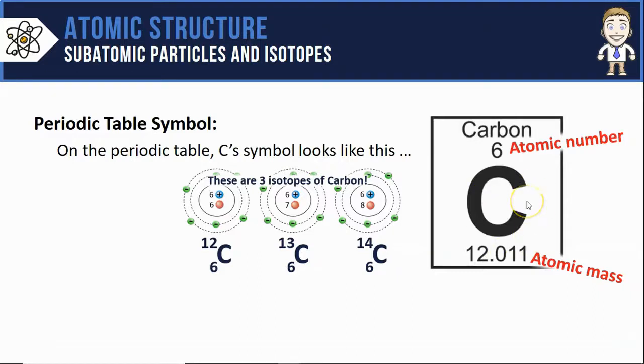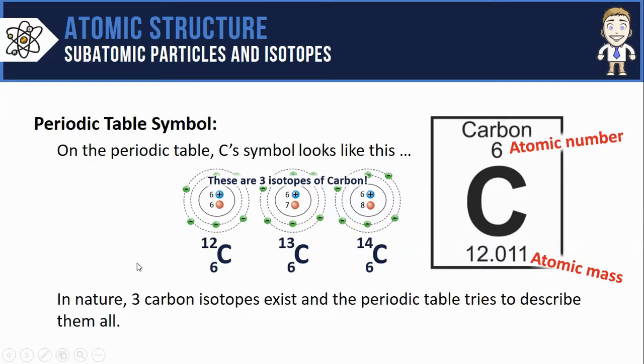So your periodic table symbol has pretty much the same information as these isotopic notations with one glaring difference, and that is the atomic mass is now a decimal. That's kind of confusing because over here, those masses were whole numbers. What you've got to realize is that in nature, carbon exists as these three different isotopes. Some carbons have a mass of 12, some 13, some 14.